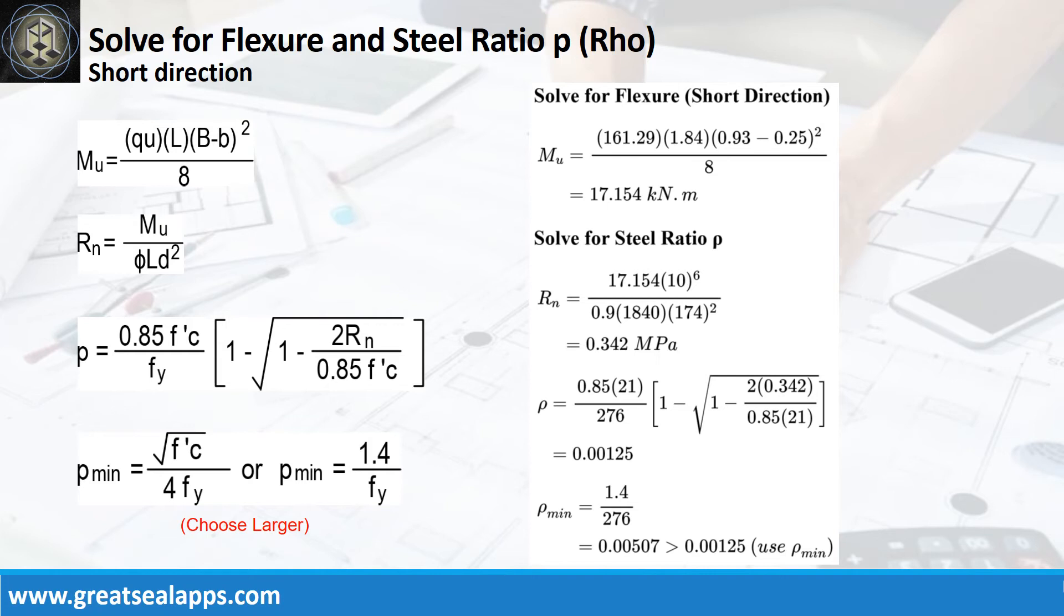Given resistance factor equals 0.9, L equals 1840mm, and D equals 174mm, the beam design ratio Rn equals 0.342 MPa and reinforcement ratio Rho equals 0.00125. Use Rho minimum of 0.00507.